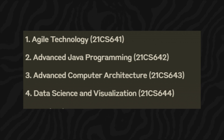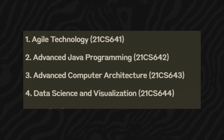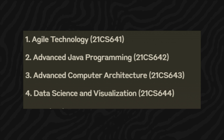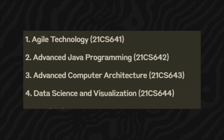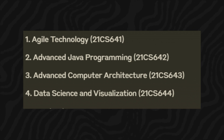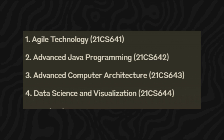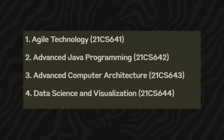The next courses are professional elective courses. Students can choose from the following: first is Agile Technology with course code 21CS641; second is Advanced Java Programming with course code 21CS642; third is Advanced Computer Architecture with course code 21CS643; and fourth is Data Science and Visualization with course code 21CS644.